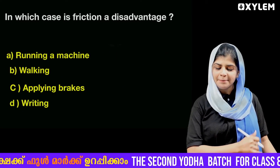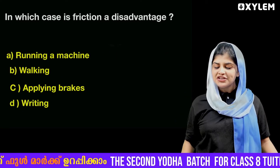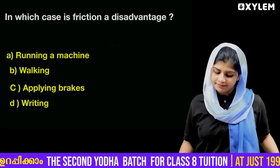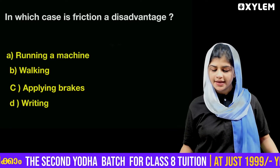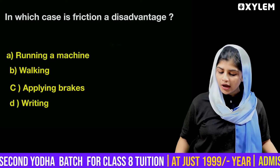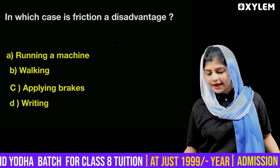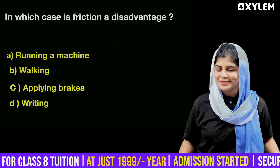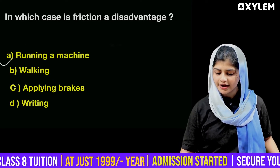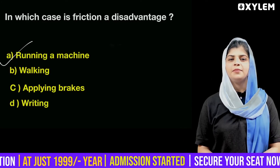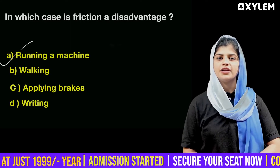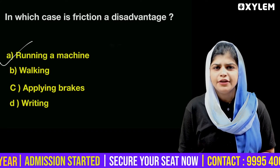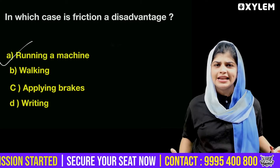Next question: In which case is friction a disadvantage? Options: A) Running a machine, B) Walking, C) Applying brakes, D) Writing. The answer is A — running a machine. Because when we use machines, friction causes wear and energy loss.